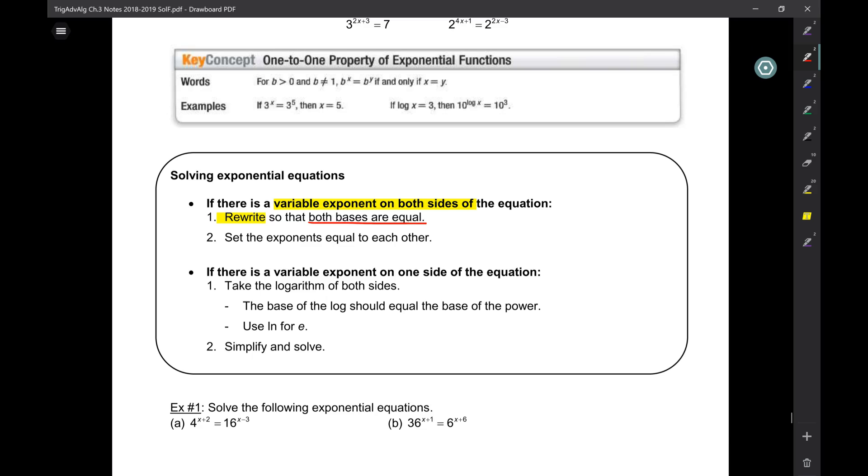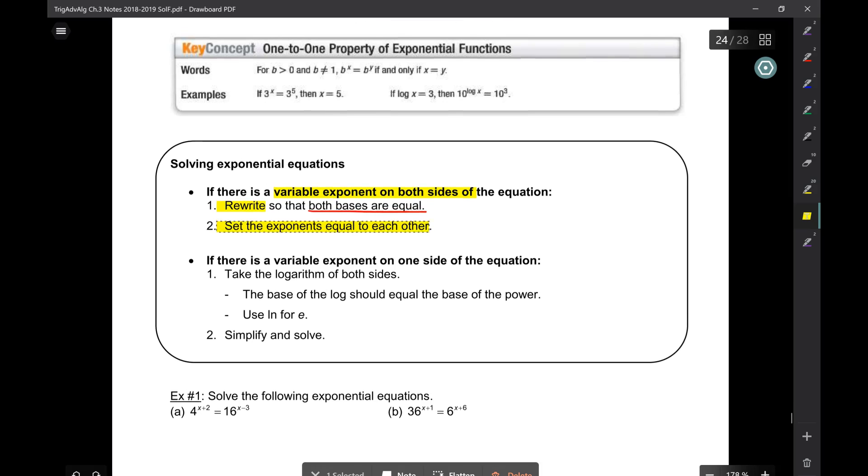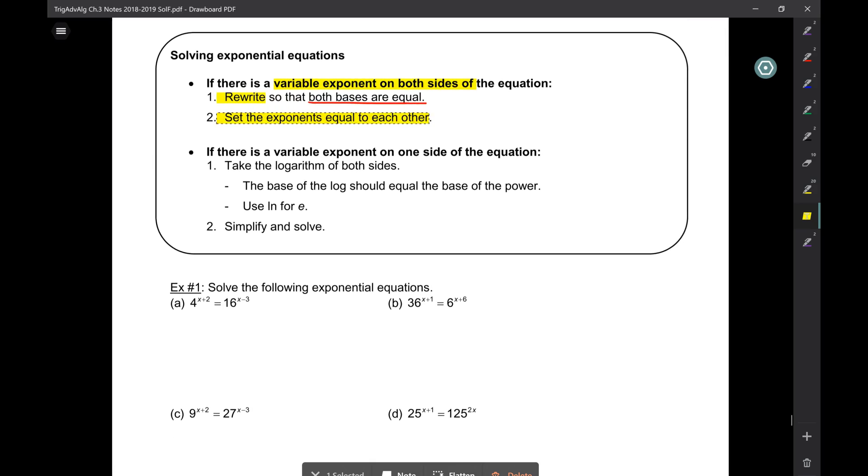what you want to do is you want to rewrite it so that both bases are equal. So if it's two to the power, it has to be two to the power, and so on. And then once the bases are equal, you can set the exponents equal to each other.